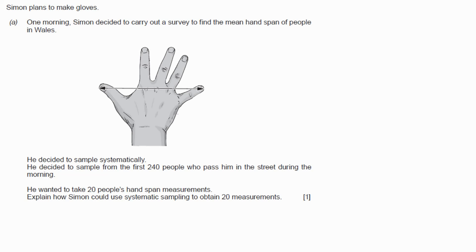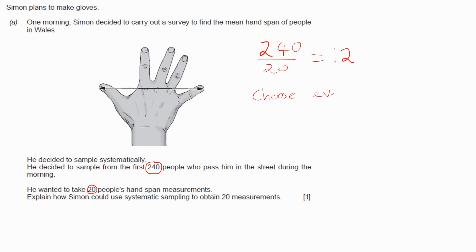Here's an example of a GCSE question on sampling. One morning, Simon decided to carry out a survey to find the mean hand span of people in Wales. He decided to sample systematically, taking a sample from the first 240 people who passed through the street during the morning, and he wanted 20 people's hand measurements. To use systematic sampling, he does 240 divided by 20, which gives 12 — so he could choose every 12th person who passed him, and he could start from the first person.